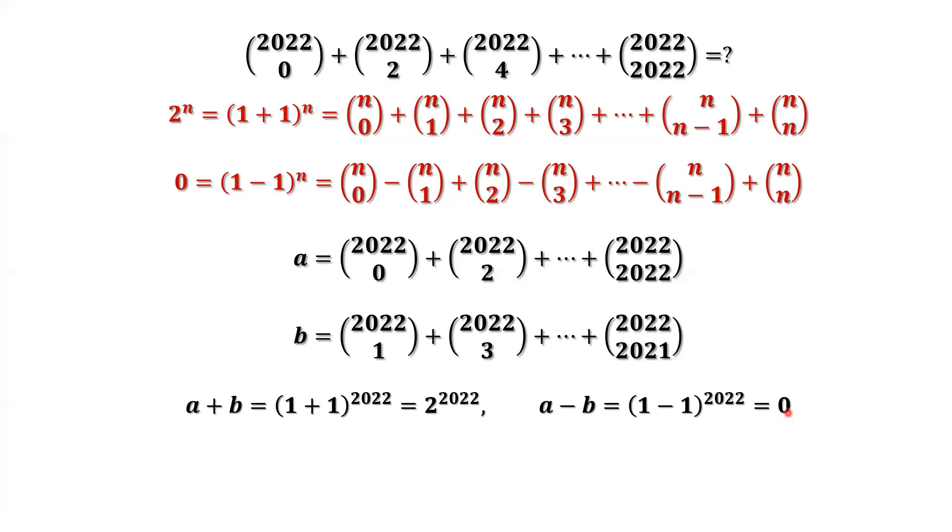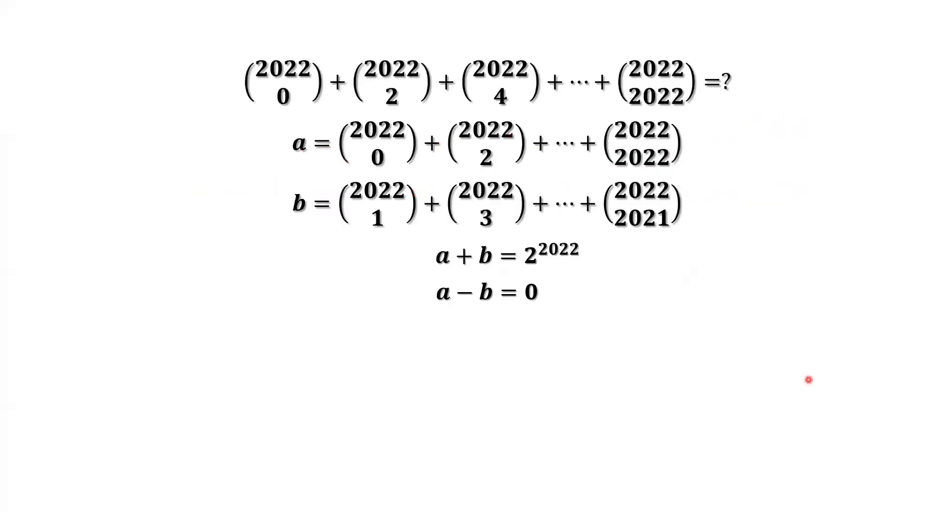We have two results: a plus b equals 2 to the power 2022, and a minus b equals 0. Solve this linear system. We find 2a equals 2 to the power 2022.